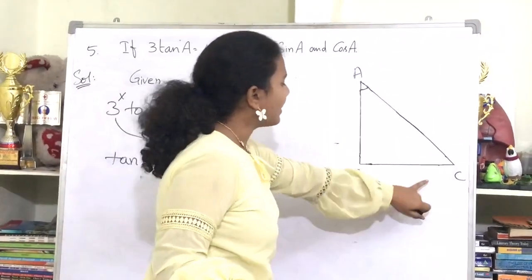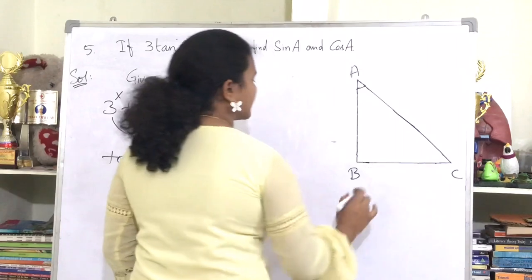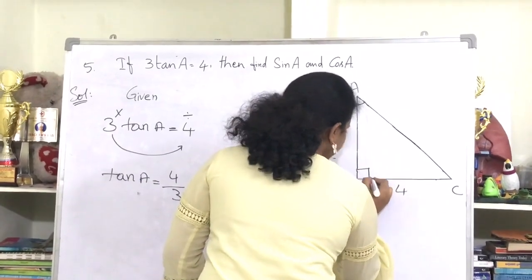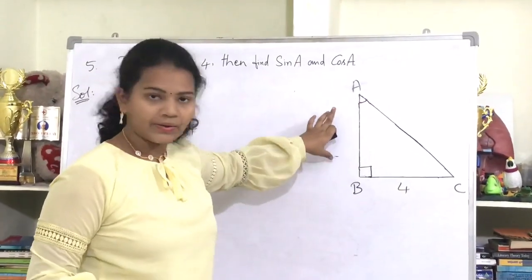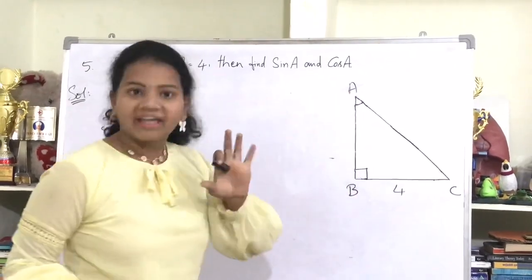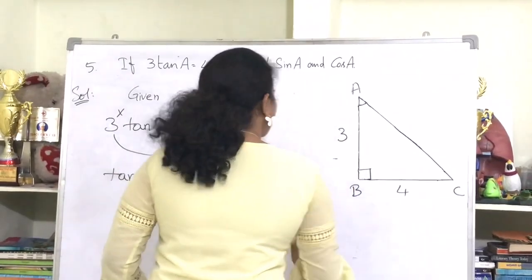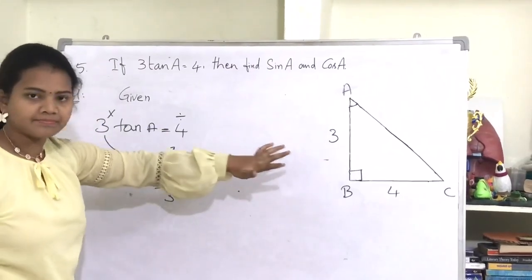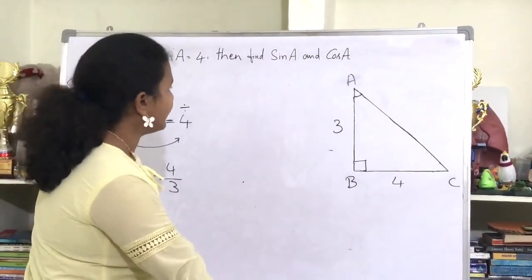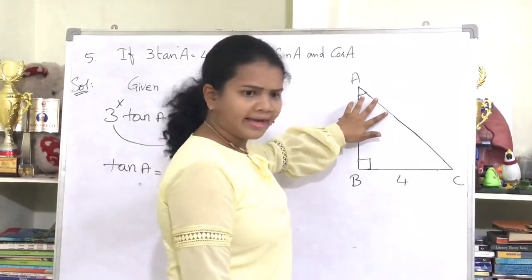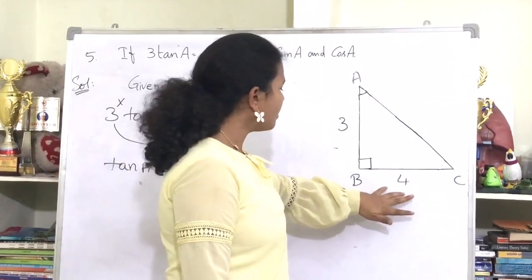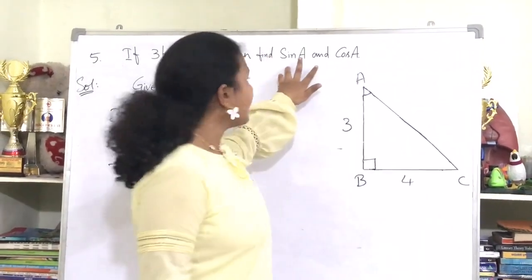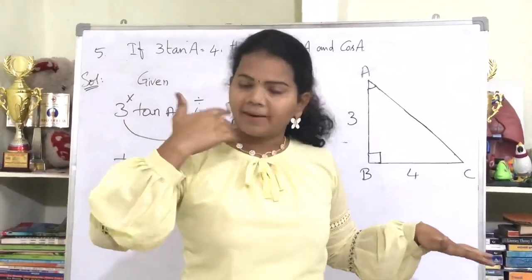Opposite to angle A, you have side BC, where BC equals 4. Adjacent to angle A, you have side AB, where AB equals 3. Now they are asked to find sin A and cos A. To find sin A, the formula is opposite side by hypotenuse. The opposite side, BC, equals 4, but we don't have a value for the hypotenuse yet.